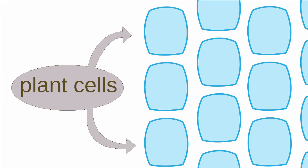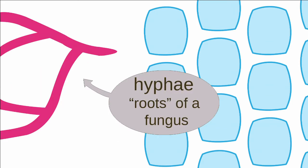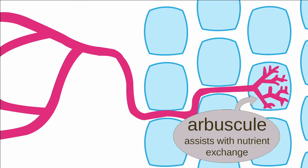Let's start with endomycorrhizae. These are the root cells of a plant. The mycorrhizae's hyphae, which are the roots of the fungus, find the plant roots. Endomycorrhizae enters the roots of the plant and penetrates the root cells, forming arbuscules, which help with the exchange of nutrients between the plant and the mycorrhizal fungi. Arbuscules are named such because they form a branching pattern resembling a tree. These branches increase the surface area of the fungal hyphae, which allows for more efficient exchange of nutrients.